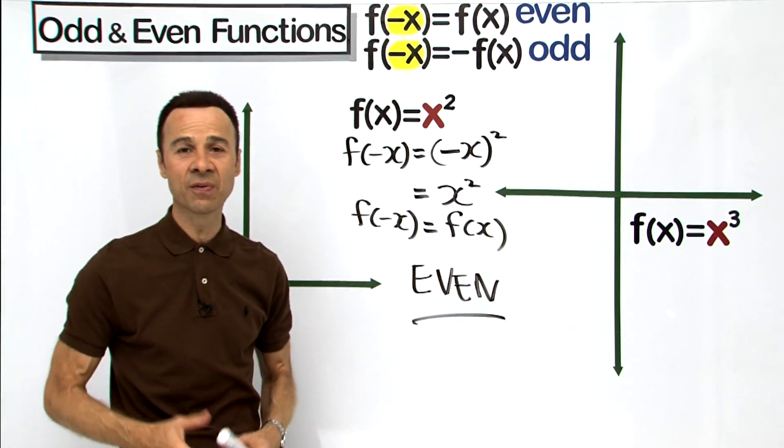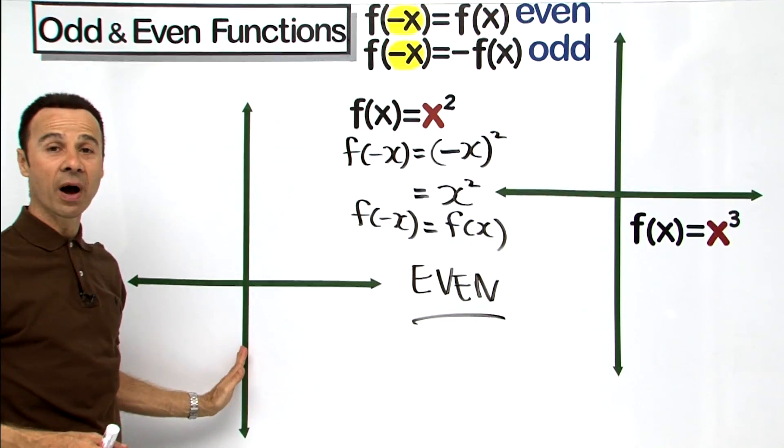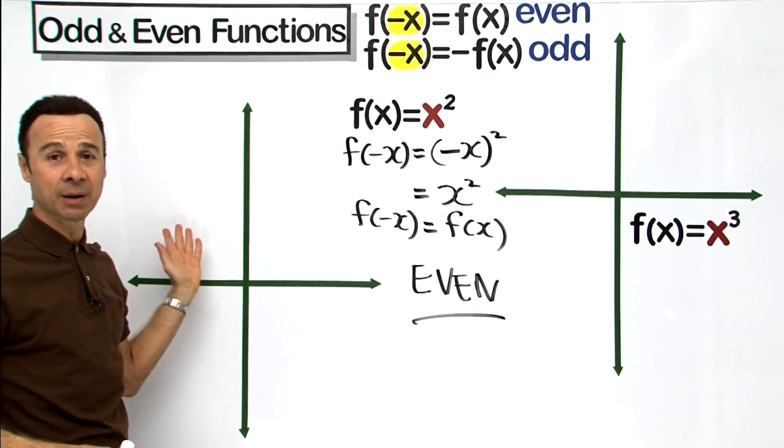Again, what is the criteria of an even function? It means that it is going to have symmetry about the y-axis, meaning it is going to be reflected about that axis.